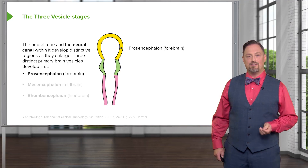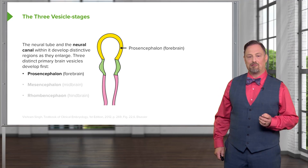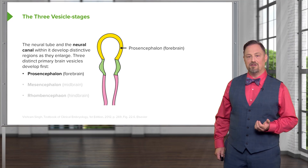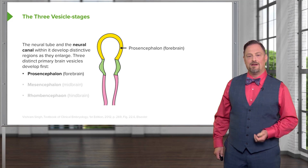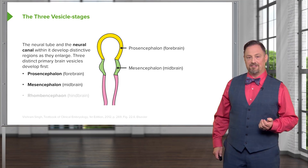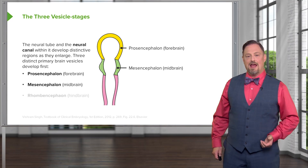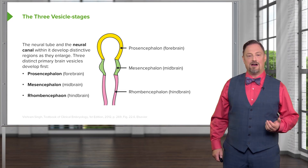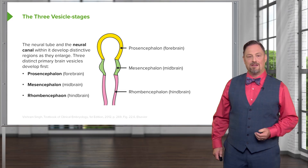Initially there are three primary vesicles that form: the prosencephalon, which is going to be the forebrain; the mesencephalon, the midbrain; and the rhombencephalon, or the hindbrain.